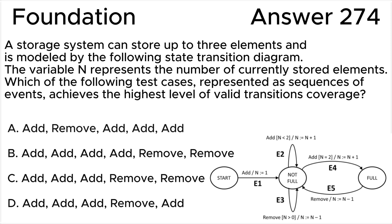Similarly, if N equals 3, no Add action is possible. Let's look at all the options. Test A can be written as E1, E3, E2, E2, E4, so covers 4 out of 5 valid transitions, achieving 80% valid transitions coverage.